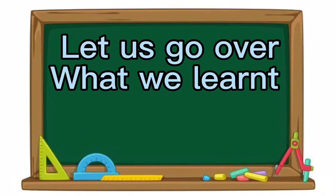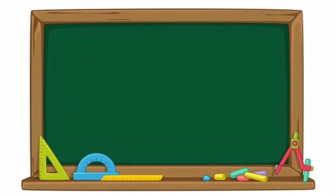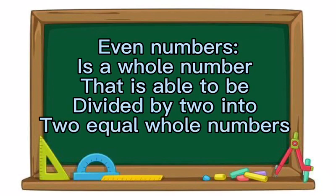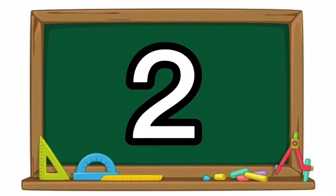Let us go over what we learnt. An even number is a whole number that is able to be divided by two into two equal whole numbers.